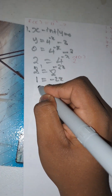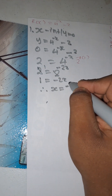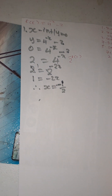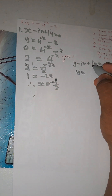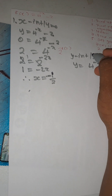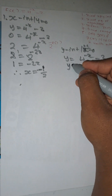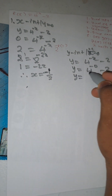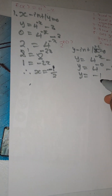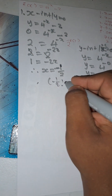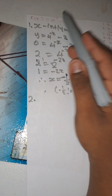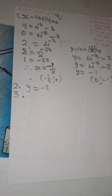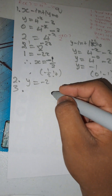Change 4 to its simplest base: 2 = 2^(-2x). With the same bases, the exponents must be equal: 1 = -2x, therefore x = -1/2. For the y-intercept, let x = 0: y = 4^0 - 2 = 1 - 2 = -1. So the coordinates are: x-intercept (-1/2, 0) and y-intercept (0, -1).